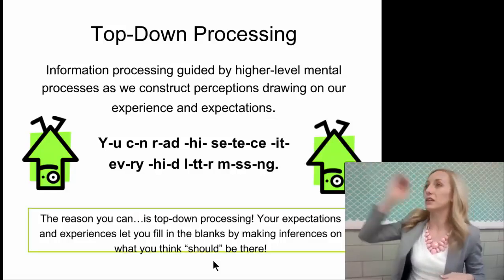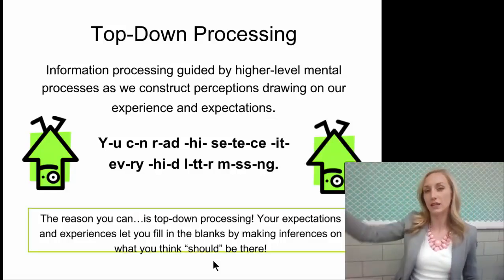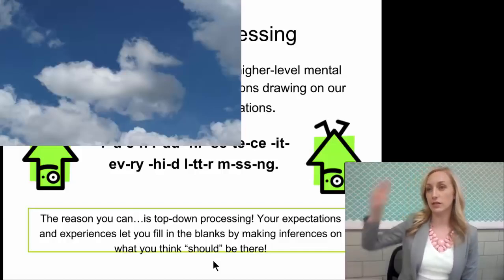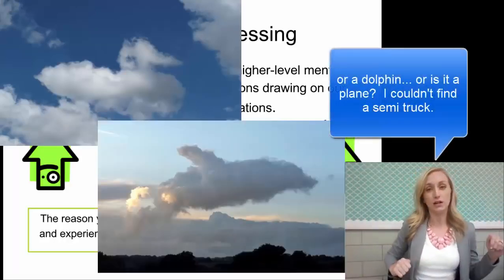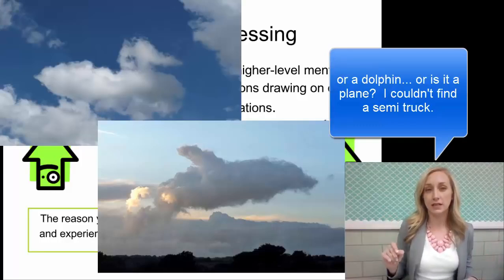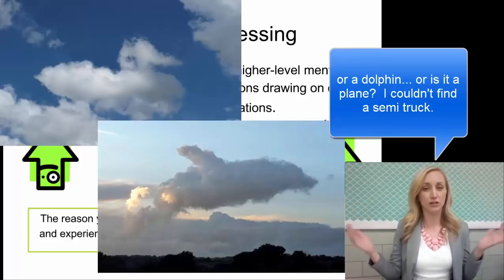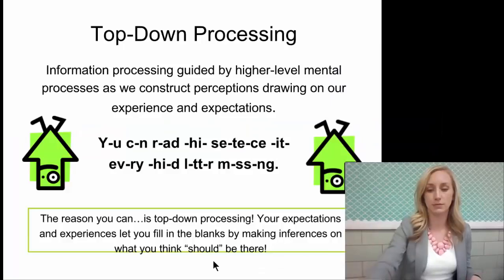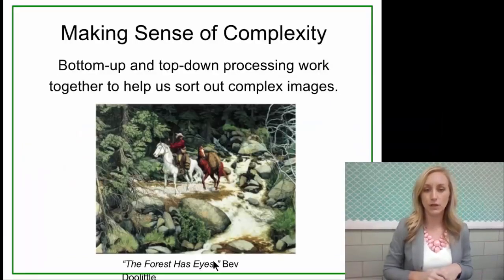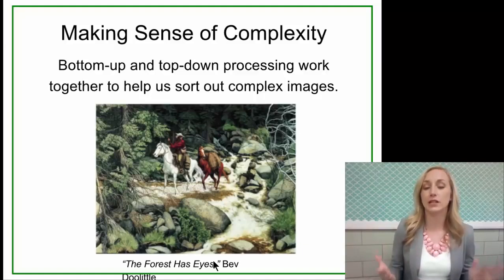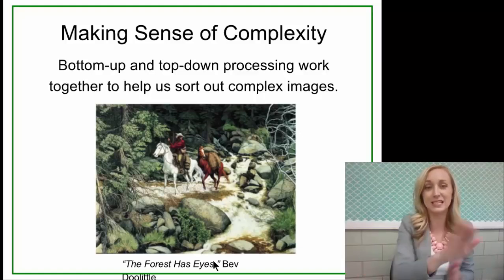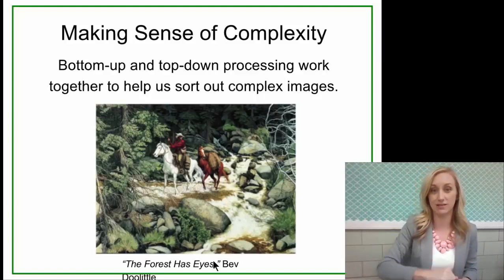Another example is when you're looking at puffy white clouds on a sunny day — you can say, ooh, that cloud looks like a duck, or that cloud looks like a semi-truck, because you have experience and know what a duck or a truck look like. That's top-down processing. Both bottom-up and top-down processing work together to help us sort out complex images, like this one. Do you see how many faces there are? There's tons.